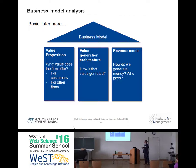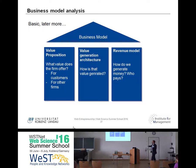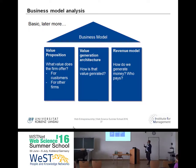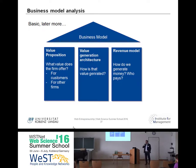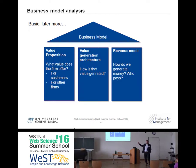So we have a value proposition: what value does the firm offer for customers or other firms? The value generation architecture: how is that value generated? And the third building block is the revenue model: how do we generate money, and who is paying for the value? These are three basic blocks which you will also find in the business model canvas, though the canvas is more extended and has additional features.